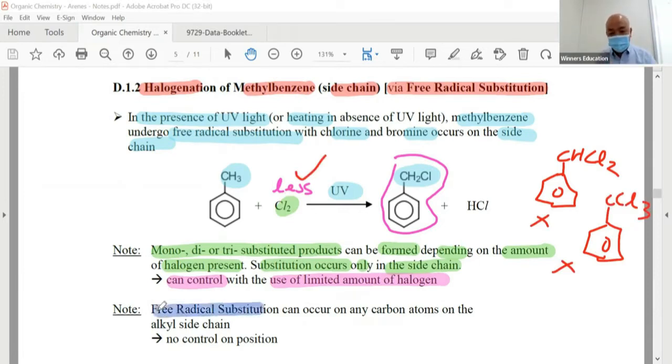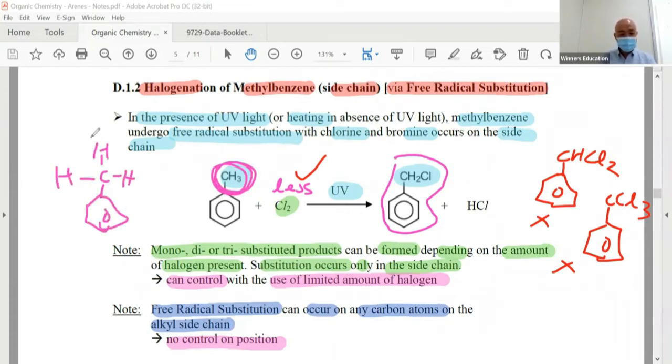However, in alkanes we also learned free radical substitution can occur on any carbon atoms on the side chain. There is no control on the position. Now this is not a problem for methylbenzene because all three hydrogens are in the same position.